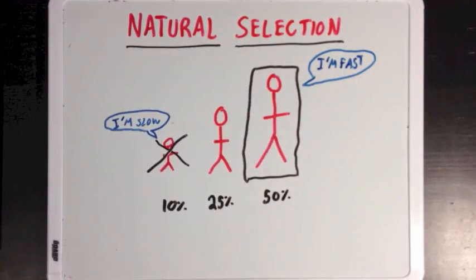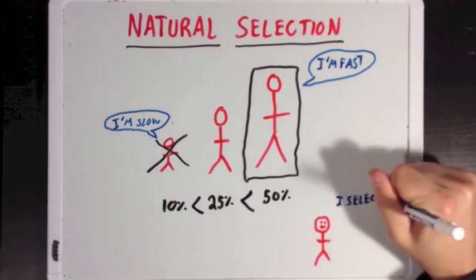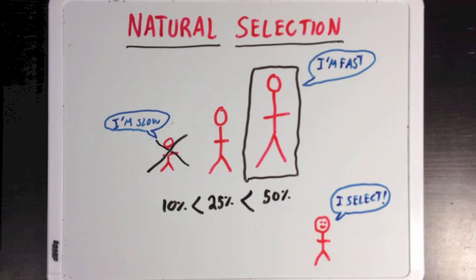Now we use the word natural because there isn't an individual who's physically selecting which traits are good and which ones are bad. It all has to do with whoever has the greatest probability of surviving. There's no one actually doing the selecting except nature itself.